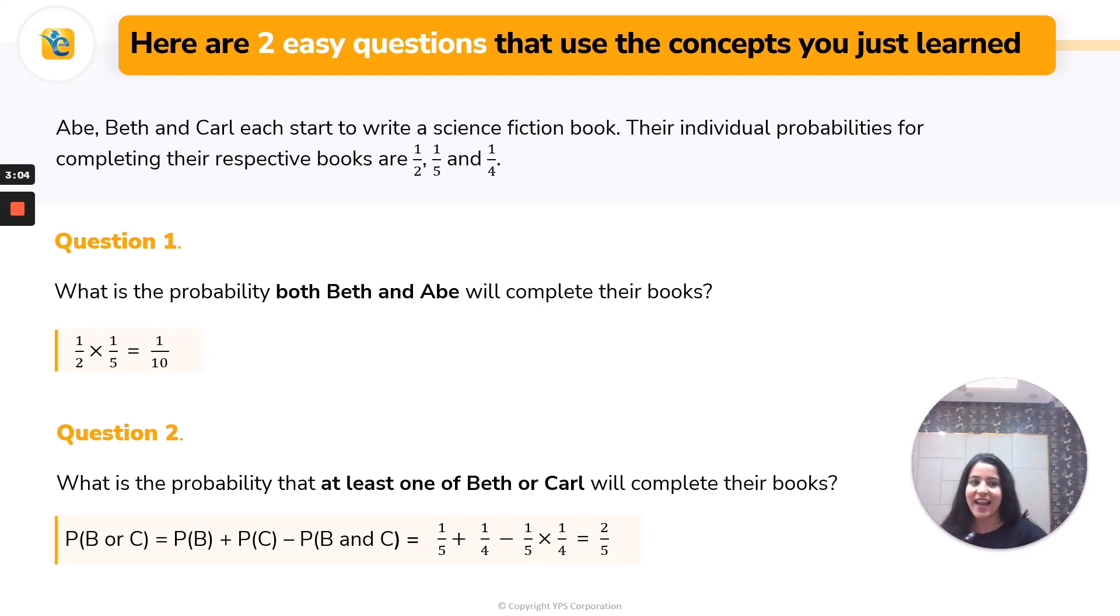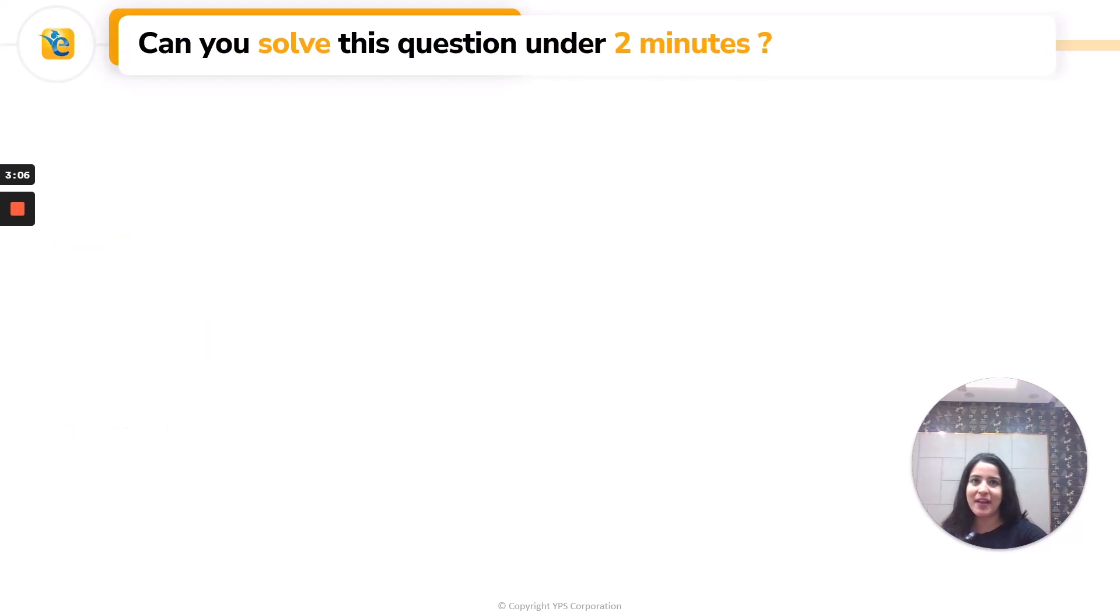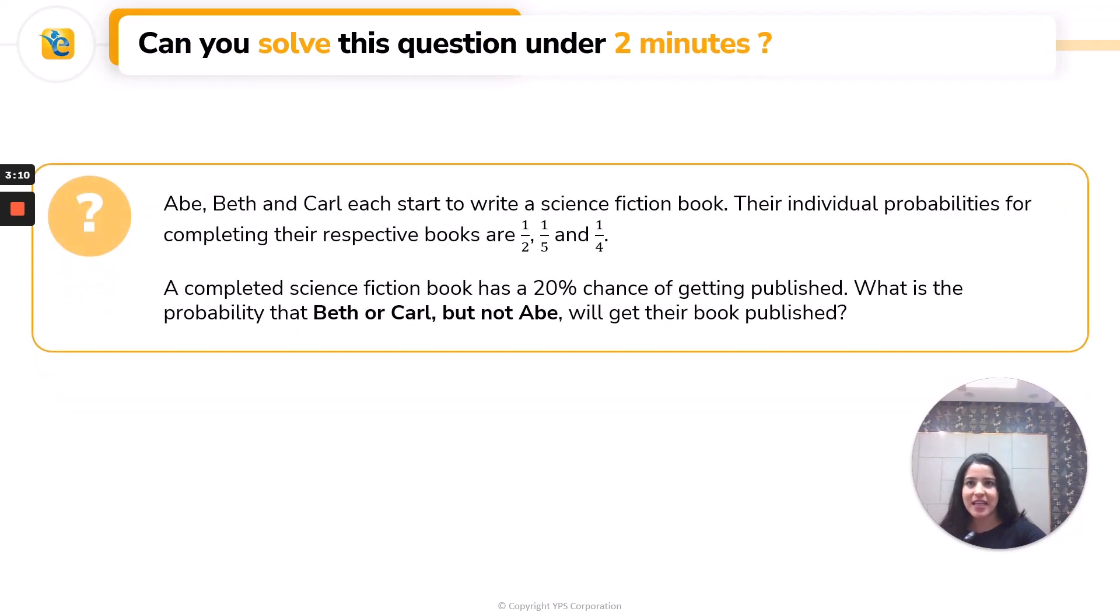Now, if you are comfortable till here, well done. Stick tight and I'm going to take this up one more level. This question. Now tell me if you can solve this in under two minutes. Here you go. Just read the question: What is the probability that Beth or Carl, but not Abe, will get their book published?